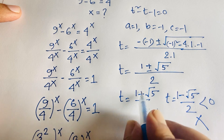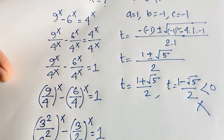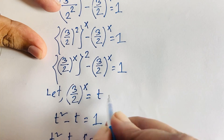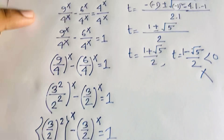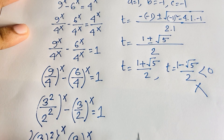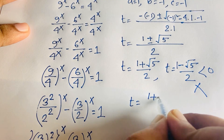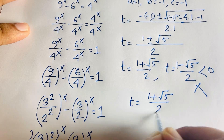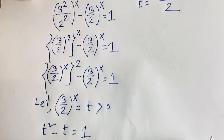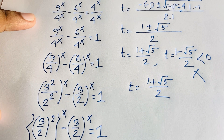Since t must be greater than zero (as t equals (3/2)^x), we take t equals (1 plus square root of 5) over 2. Remembering that t equals (3/2)^x, we now solve for x.